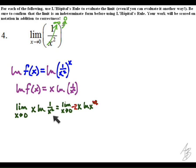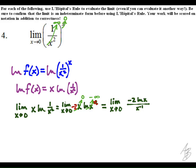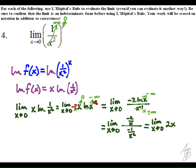To simplify the process, I wrote one over x squared as x to the negative two, then used a law of logs to rewrite it as negative two x times the natural log of x, bringing the negative two out front. Here we have the indeterminate form zero times negative infinity, so we rewrite it as a quotient, keeping the natural log on top. We get the indeterminate form infinity over infinity, and using L'Hôpital's rule we get the limit as x approaches zero of two x, which is zero.